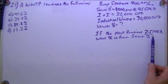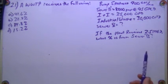If the plant receives 25 MGD, what percent is from Sewer B?